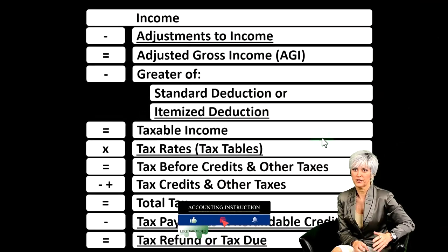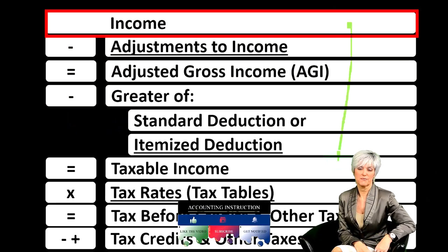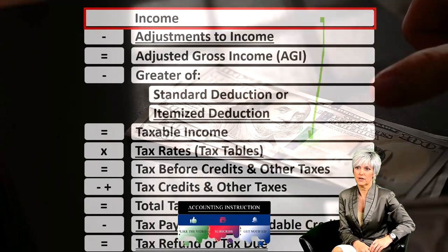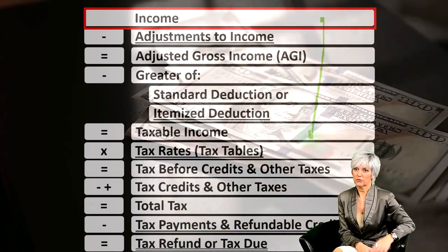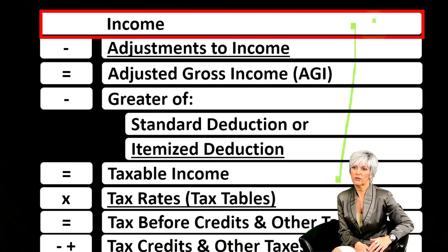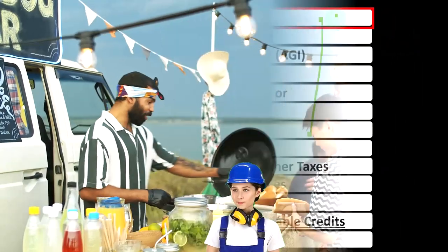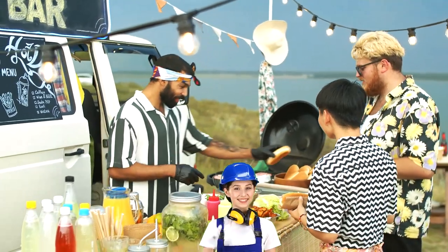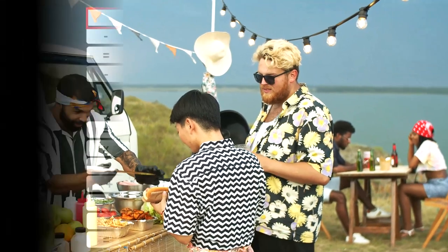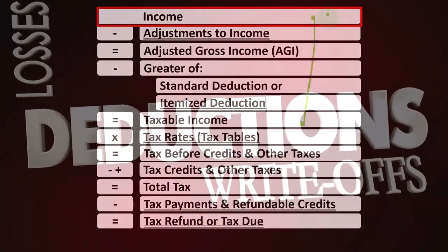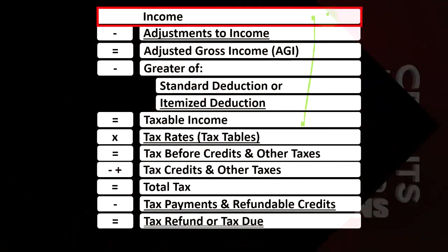Looking at the income tax formula, we're focused on line one, that being income. The first half of the income tax formula is in essence an income statement, just a scaffolding, meaning other forms and schedules will be feeding into these line items. We're focused on the income line and the Schedule C, the form used for sole proprietors and small businesses, which is in essence another income statement, having business income minus business expenses — otherwise known as business deductions — that gets down to net income from the business, which will flow into line one of our income tax formula.